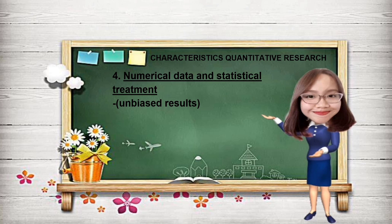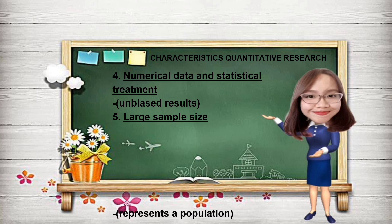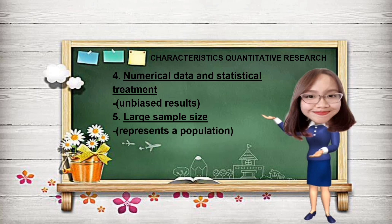Number 5: Large sample size. To arrive at a more reliable data analysis, a normal population distribution curve is preferred. This requires a large number size, depending on how the characteristics of the population vary. Random sampling is recommended in determining the size to avoid being biased in interpreting results.